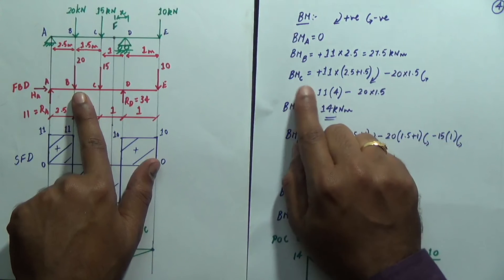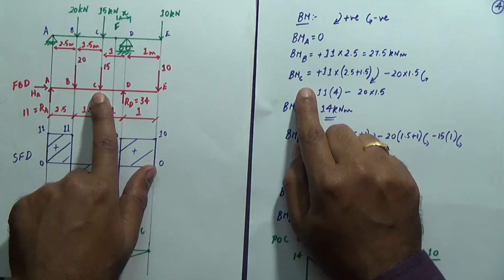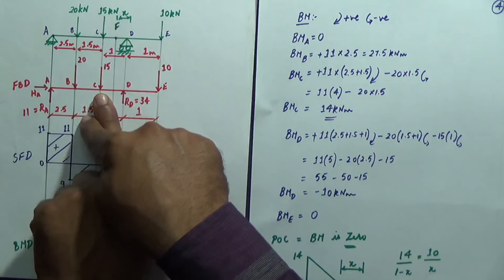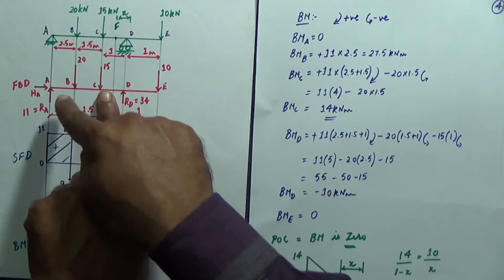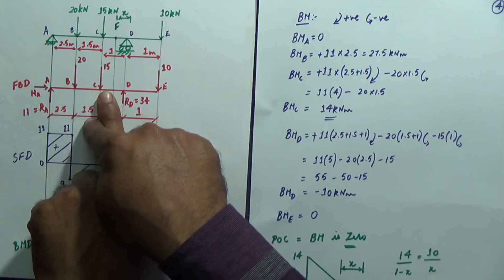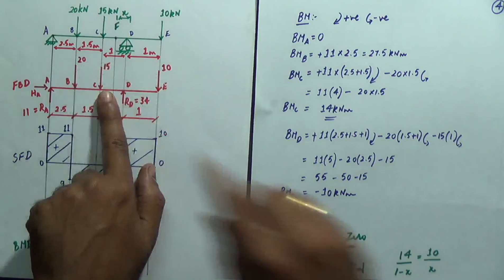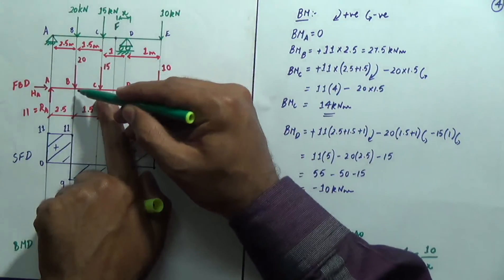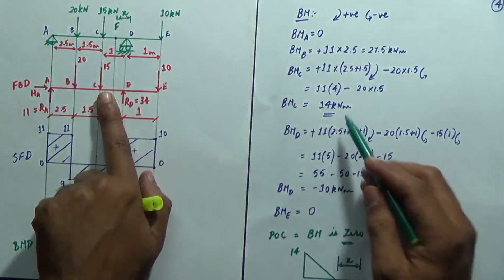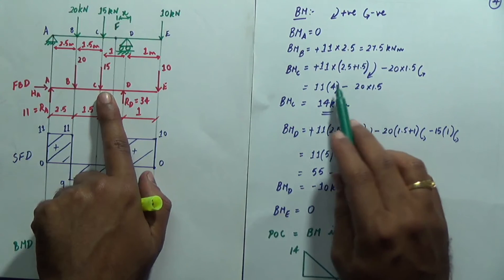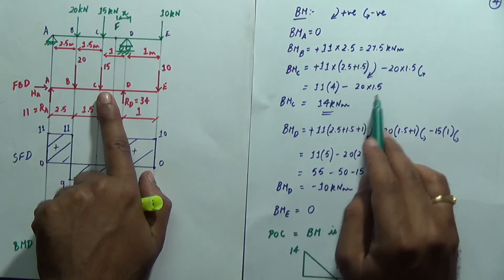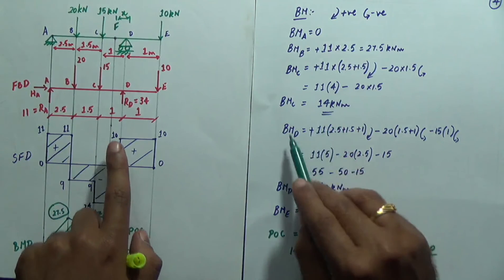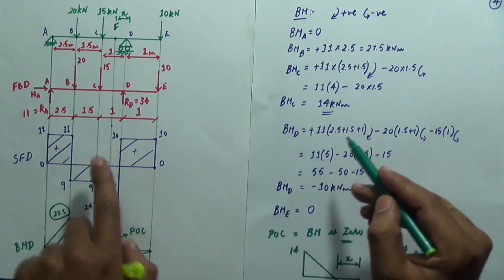Bending moment at B: keep a hand at B — 11 × 2.5, acting clockwise = 27.5 kNm. Always write units. Bending moment at C: 11 × (2.5 + 1.5) − 20 × 1.5, where the 20 kN load is acting anti-clockwise. Simplifying gives BM at C = 14 kNm.